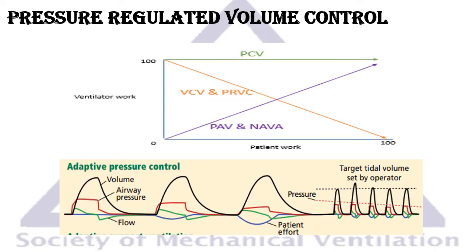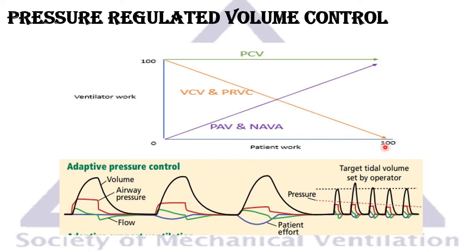In this slide I'll explain why I'm not a fan of this mode. This graph shows the relationship between patient work on the x-axis and ventilator work on the y-axis. At 0% the patient is passive and the ventilator does all the work; at 100% the patient does all the work. In the green line — a pressure controlled mode — no matter what the patient's work is, the ventilator gives the same airway pressure support.